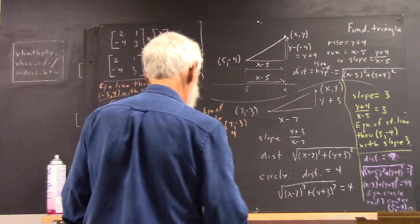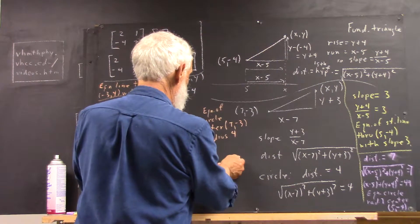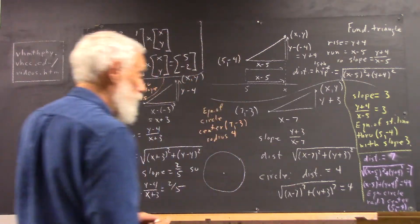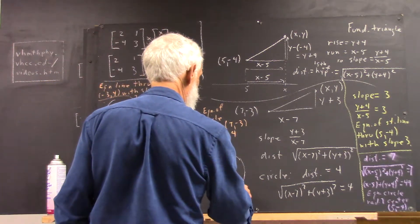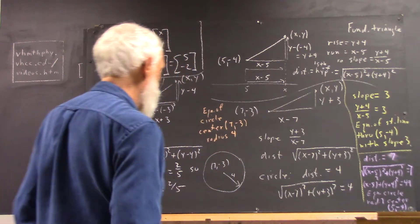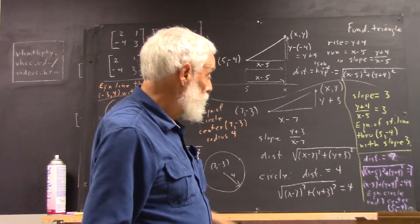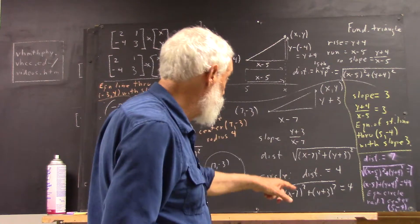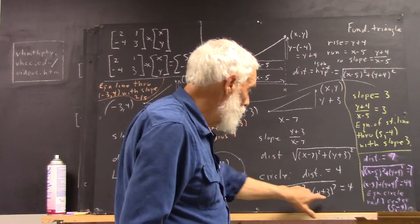So, the circle through this, well, with this center and this radius, what do you do? You know, you put the center down here, and then you set your compass at the radius, and you do this, and you get a better circle than that, but you get the idea. And every point out here is at distance 4. The equation of that circle is this. It's just a statement that the distance equals 4. The distance from 7, negative 3 to any point x, y is this.